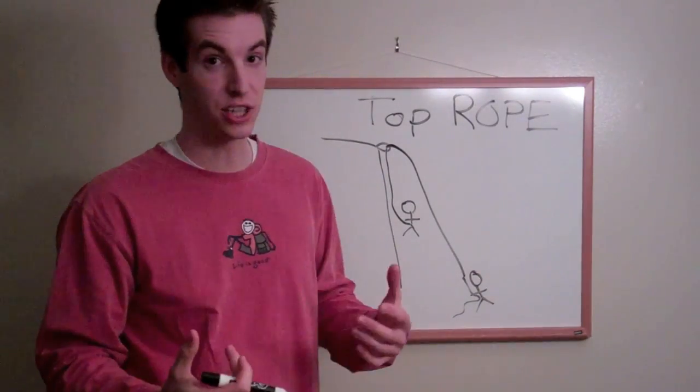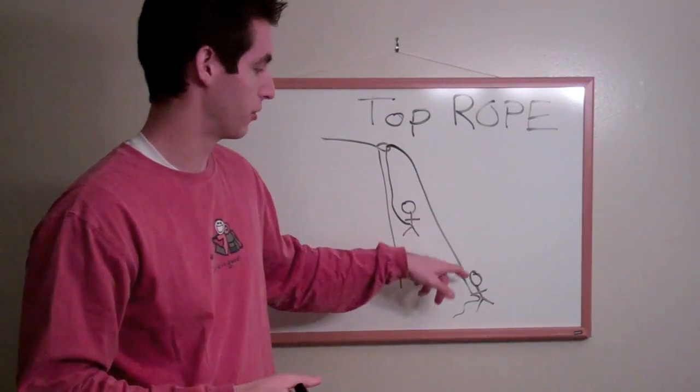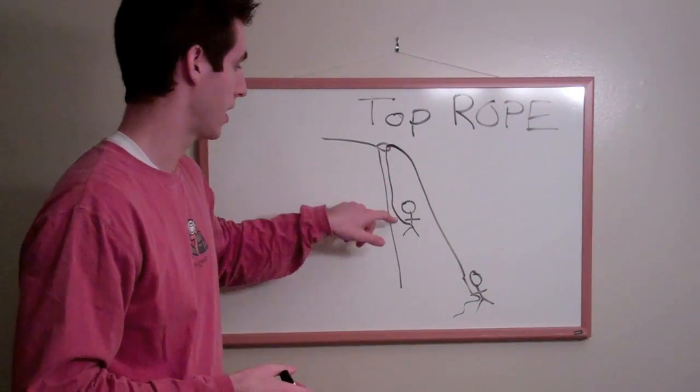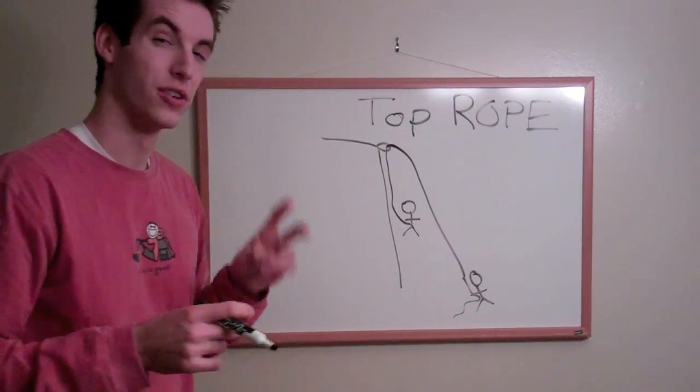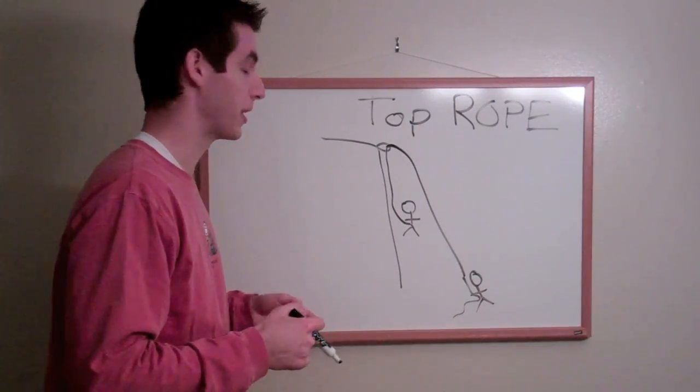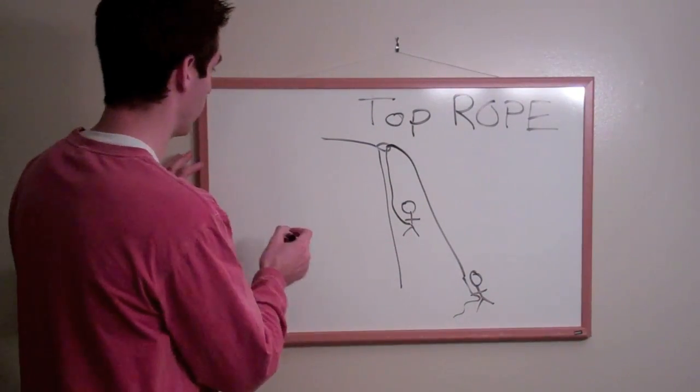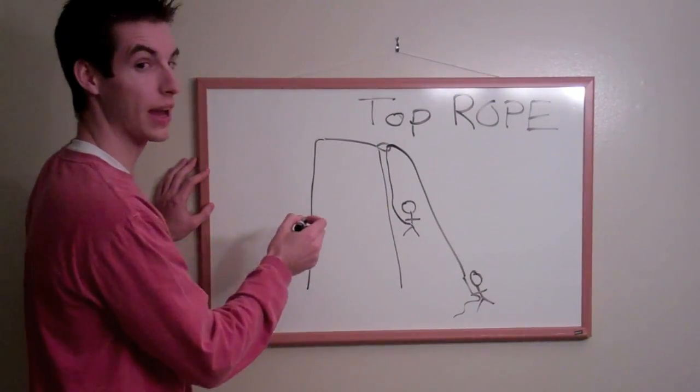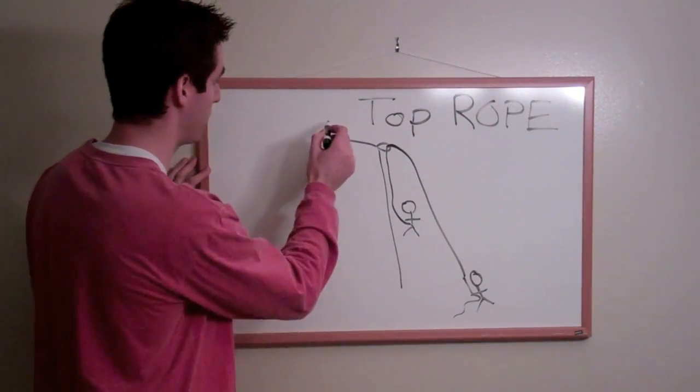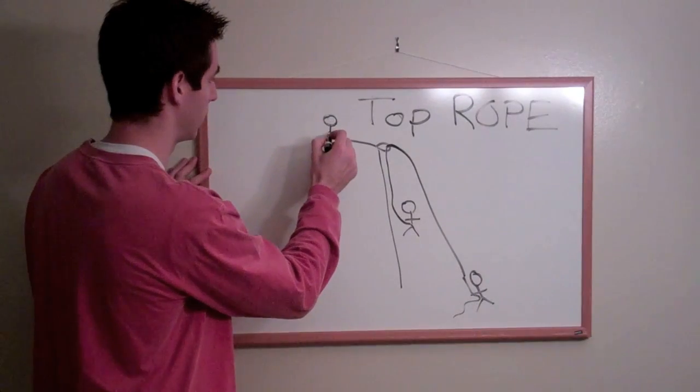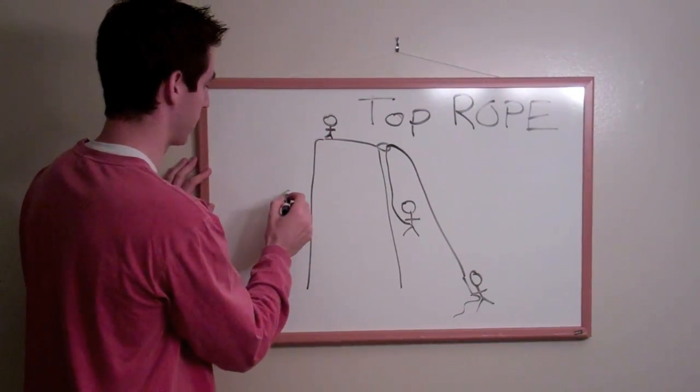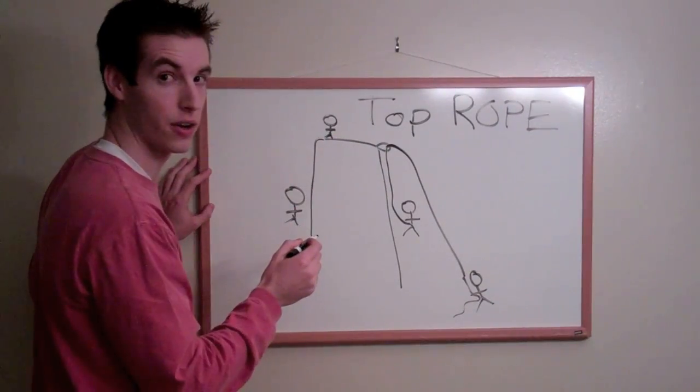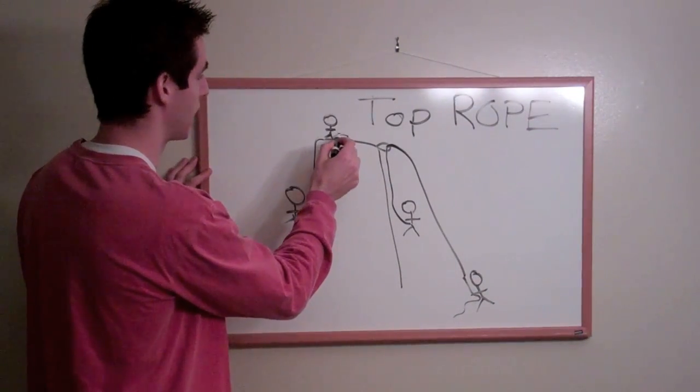This is also called a slingshot top rope, because the rope goes from the belayer to the top and then down to the climber. There's another type of top roping called top belay. If we extend our cliff to the other side, the belayer would make an anchor on the top of the cliff.